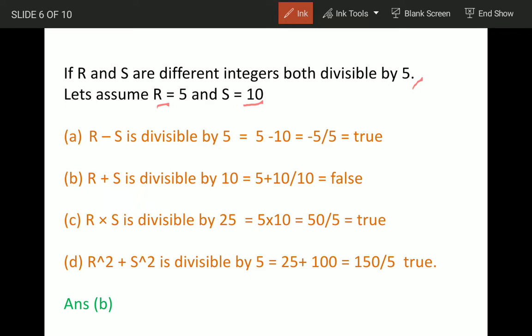So first condition: R minus S divisible by 5. This is divisible by 5 and true. This can be negative also because integers can be positive or negative. But second condition, R plus S...